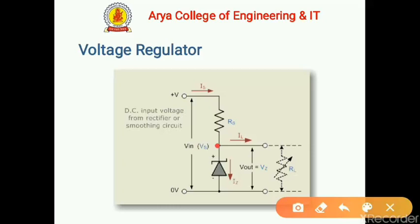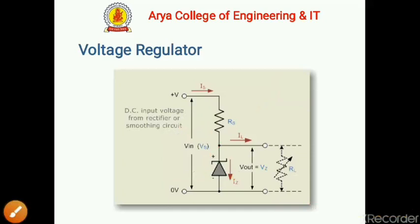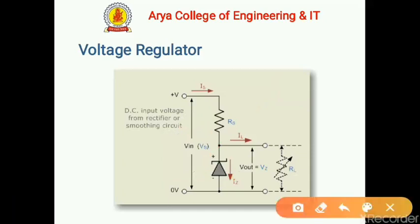Applying KVL in the loop: Vs = drop across resistor + drop across Zener diode, giving the equation Vs = Is·Rs + VZ, where VZ is the constant voltage provided by the Zener diode.